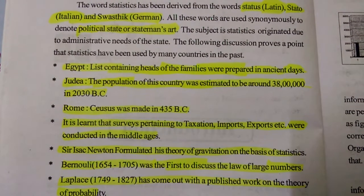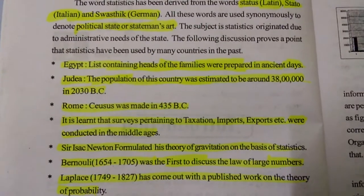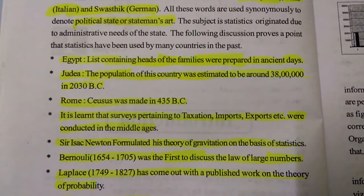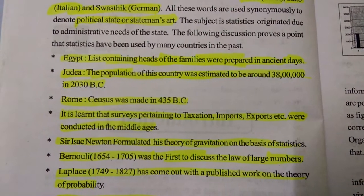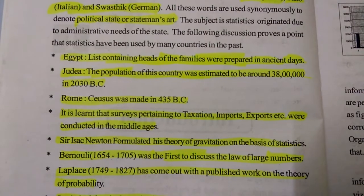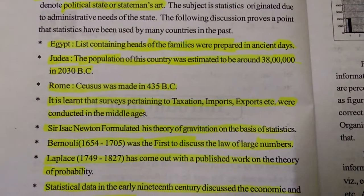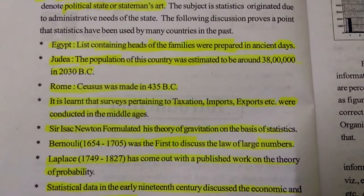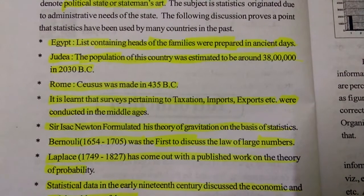In Rome, a census was made in 435 B.C. It is noted that surveys pertaining to taxation, imports, and exports were conducted in the middle ages.